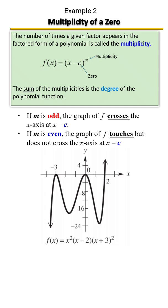The multiplicities are the exponents. So that's 2 plus 1 plus 2, which is a total of 5. So this is a fifth degree polynomial.